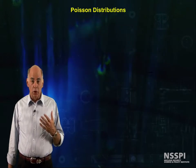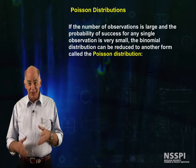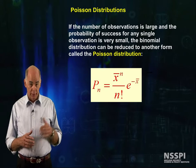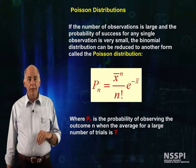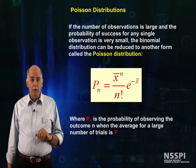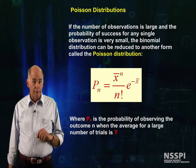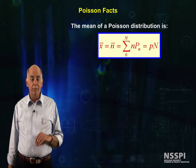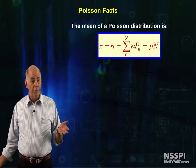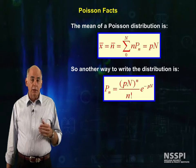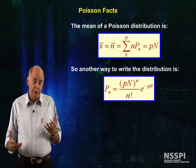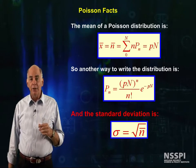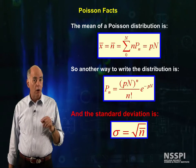If the number of observations is large and the probability of success for any single observation is very small, the binomial distribution can be reduced to another form called the Poisson distribution, shown here. P sub n is the probability of observing outcome little n when the average for a large number of trials is x-bar. The mean x-bar of the Poisson distribution is just the probability per trial times the number of trials, or big P times big N. The important fact for us nuclear types is that the standard deviation of a Poisson is just the square root of x-bar, the expected value.